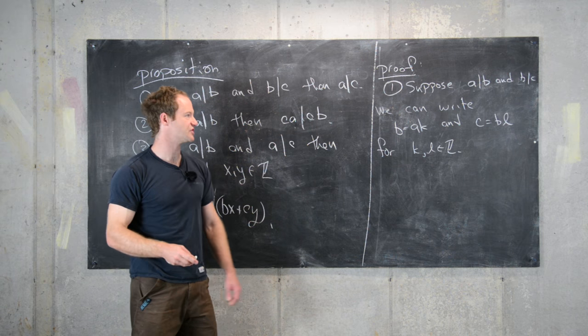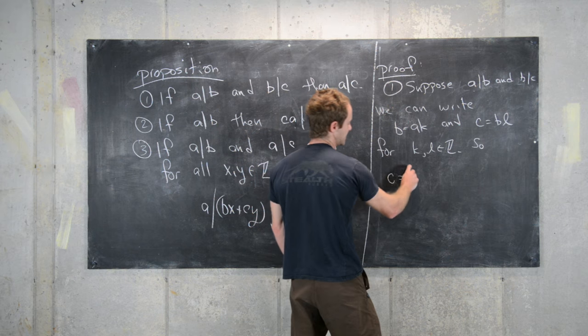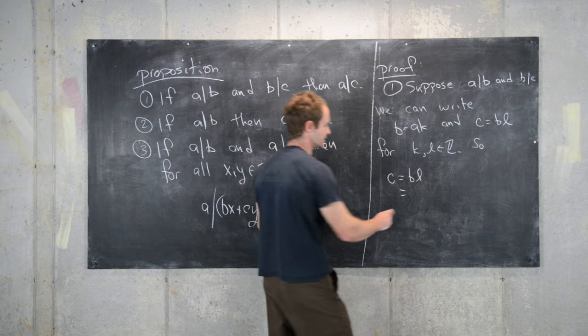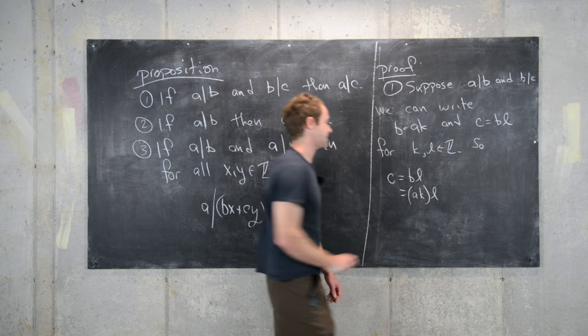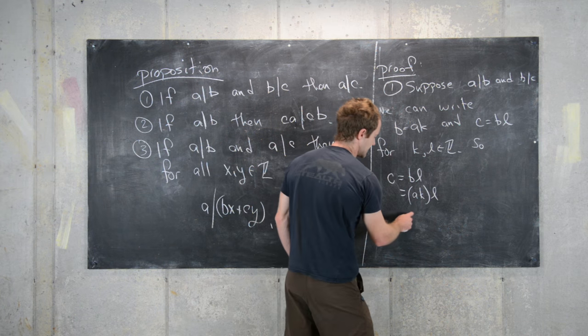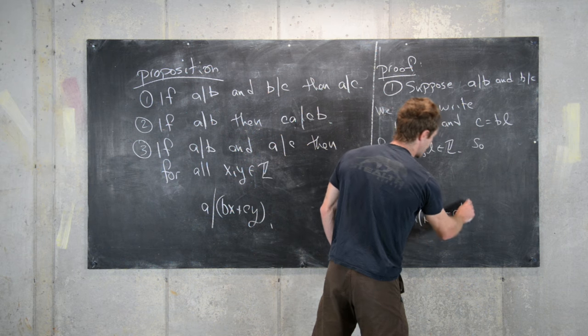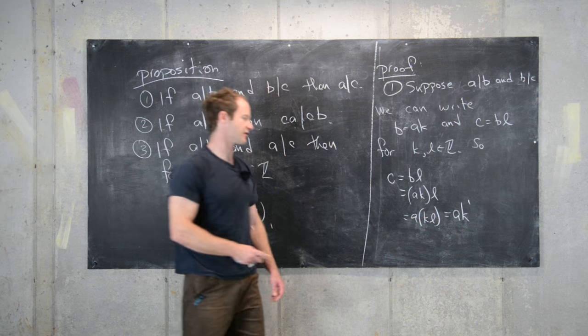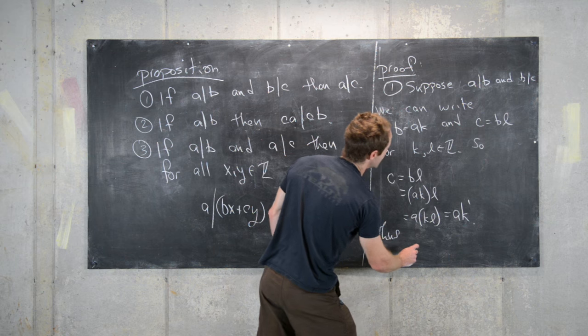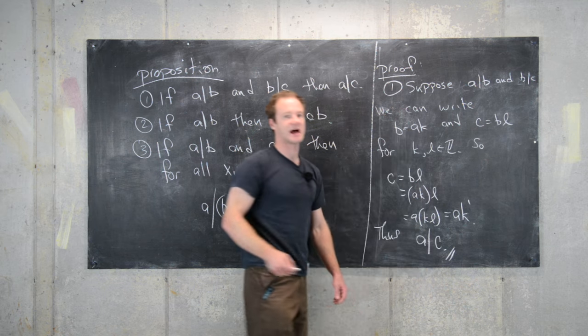The next thing we do is match these two equations together and that'll give us C equals B times L, which equals, we'll replace B with this, so that's a times K times L. Now we can reassociate so that gives us a times K times L which is a times K prime, and K prime is another integer. Thus we have a divides C as desired.